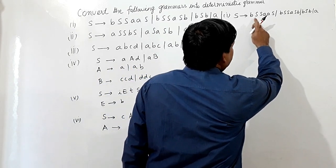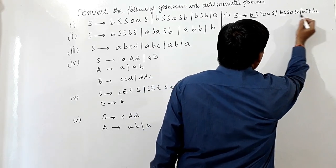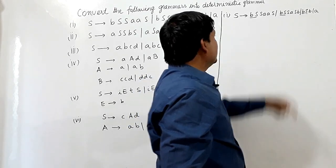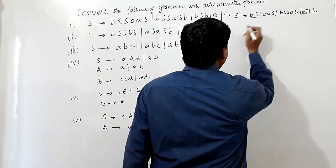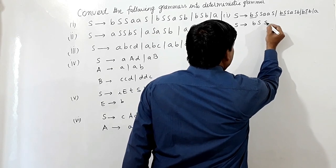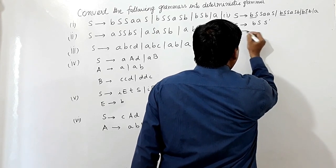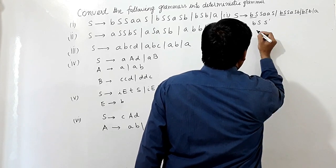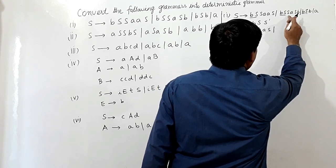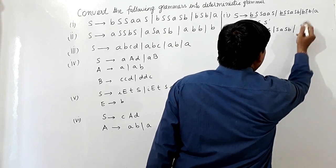BS, BS, BS — this is the common prefix in these productions. So I will take BS common and write S produces BS S-dash. Then S-dash will produce the remaining parts: SAA S or SAS B, and here it is B.